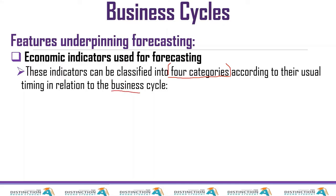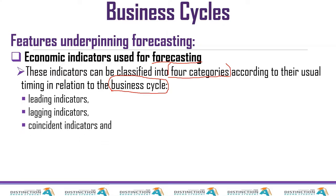Remember, we are still on business cycles — successive periods of fluctuations in economic activity. Forecasting means to predict. Just like weather forecasters tell us what's going to happen tomorrow or next week, in economics we also do this forecasting. The four categories are: leading indicators, lagging indicators, coincident indicators, and composite indicators.